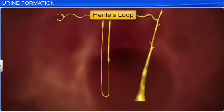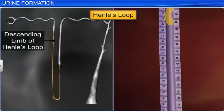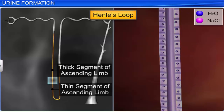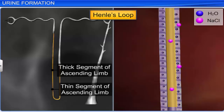The proximal convoluted tubule is followed by Henle's loop, where minimal reabsorption takes place. However, the region plays a vital role in maintaining the high osmolarity of medullary interstitial fluid. The descending limb of Henle's loop is permeable to water and almost impermeable to electrolytes, which helps concentrate the filtrate as it moves down. The ascending limb is permeable to electrolytes, actively or passively, and is impermeable to water. Therefore, electrolytes pass into the medullary fluid and dilute the concentrated filtrate as it passes upwards.